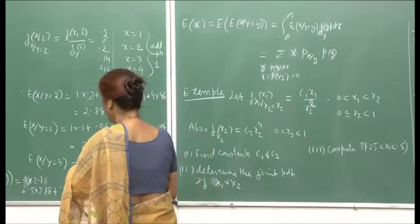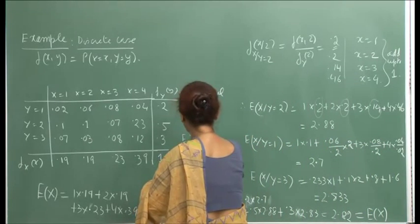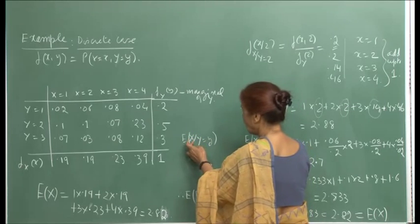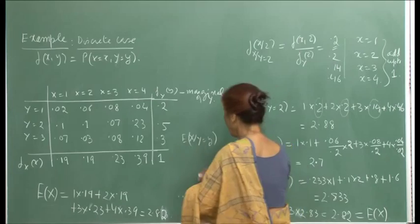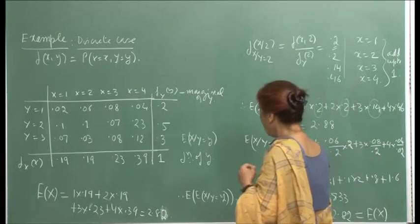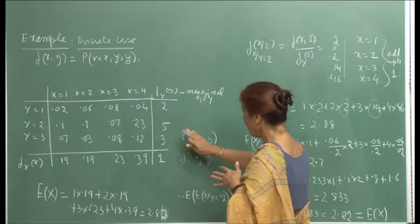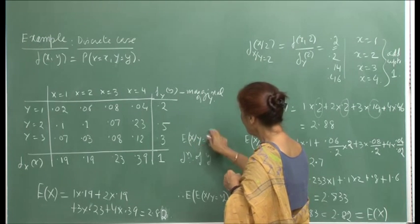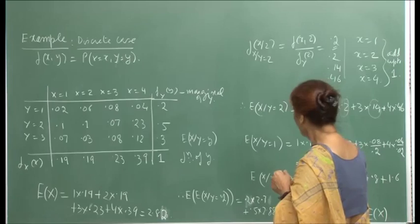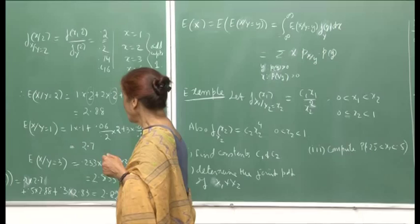Notice that E(X|Y=y) is a function of y. To compute E(X) via the conditional expectation, we multiply each conditional expectation by the corresponding marginal probability of Y: 0.2×2.7 + 0.5×2.28 + 0.3×E(X|Y=3) = 2.82. We can verify this equals E(X) computed directly from the marginal: 0.19×1 + 0.19×2 + 0.23×3 + 0.39×4 = 2.82. This illustrates the law of total expectation, which we will discuss in detail next lecture.